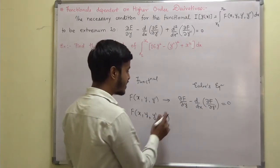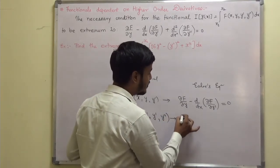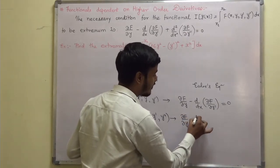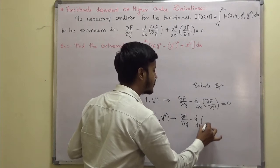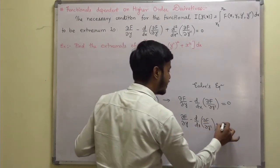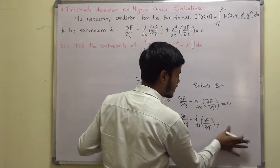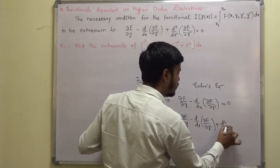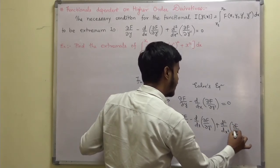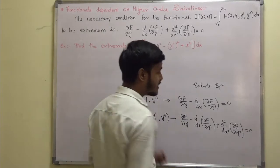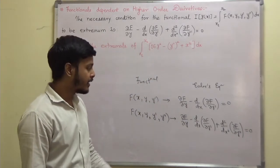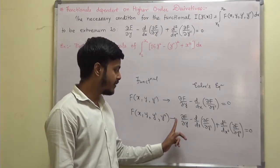Now we will be having functionals of a higher-order type. For a functional depending on x, y, y', and y'', the Euler's equation would be: del f / del y  minus  d/dx of (del f / del y')  plus  d²/dx² of (del f / del y'')  equals zero. Notice the alternating signs: plus, minus, plus, minus.